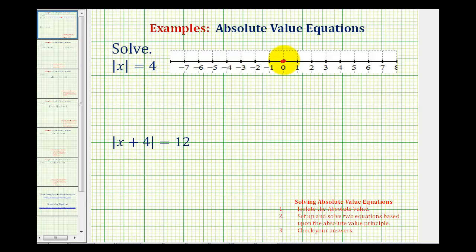Well here's 0 on the number line, so positive 4 would be 4 units from 0. But notice that negative 4 would also be 4 units from 0. Because when we talk about distance, distance is always positive.